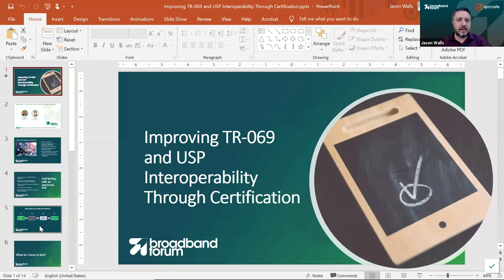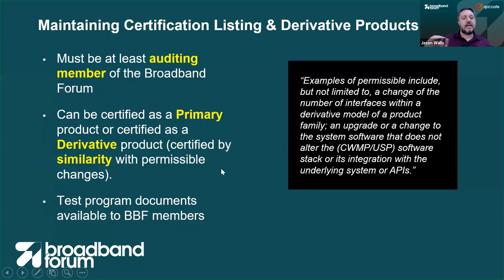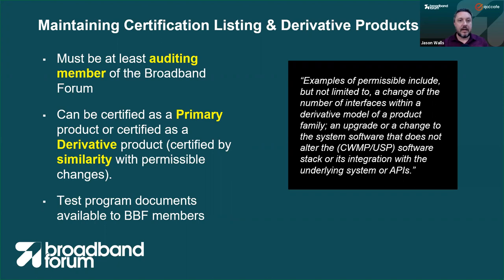Let's talk about what it means to maintain certification. In order to be certified, you must be at least an auditing member of the Broadband Forum — that is the lowest membership level. You can be certified as a primary product or as a derivative product. A derivative product means you've made some permissible changes to a device that don't alter the protocol stack for TR69 or USP in any way, nor alter how it interacts with the underlying system. That allows you to transfer certification to that derivative product without having to redo certification every single time you update the firmware.